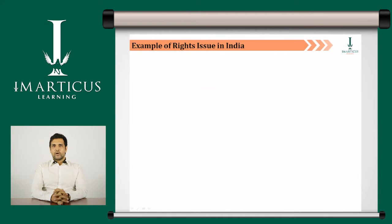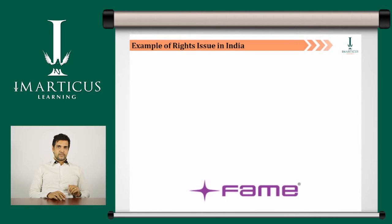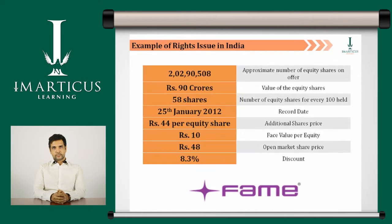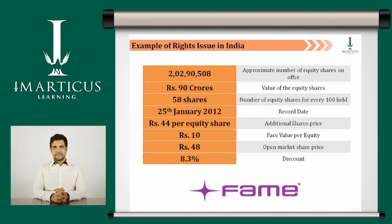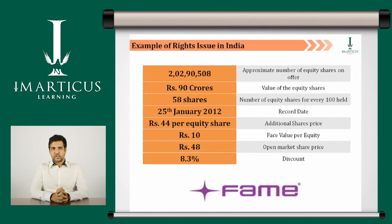Let us now look at an example of a rights issue in India. In February 2012, Fale Ad Labs issued a rights issue with 2,90,508 equity shares aggregating to approximately 90 crore rupees. The rights issue ratio was 58 equity shares for every 100 equity shares held by the shareholders as on the record date, which was 25 January 2012. The company issued these additional shares at a price of 44 rupees per equity share. The face value per equity share is 10 rupees. The open market price of this share was 48 rupees, thereby giving a discount of 8.3%.